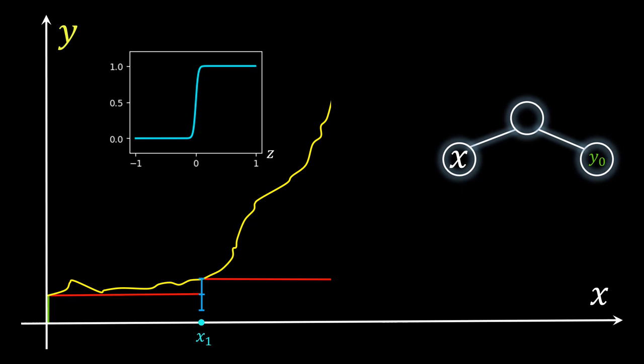If we call the input value z, then 1 divided by 1 plus e to the power of minus z achieves exactly that. The z here includes a large hidden constant kappa. The larger this kappa, the steeper the function will rise when it approaches 0. In our case, kappa is 50, that's already almost vertical.